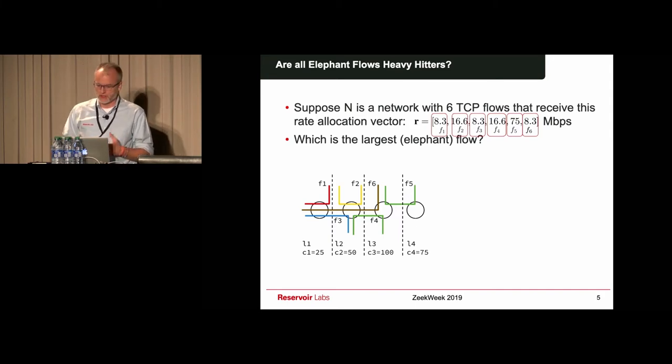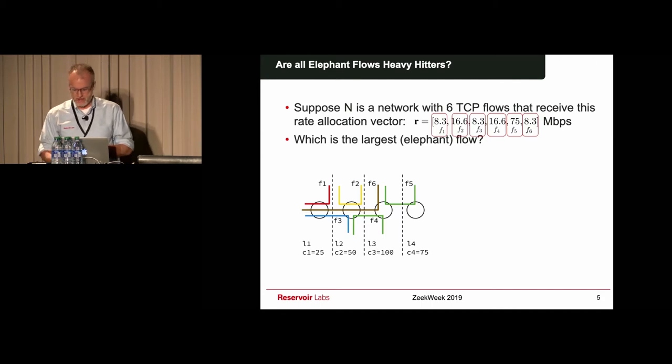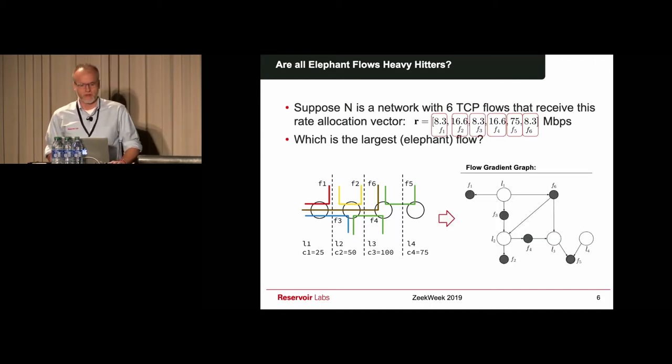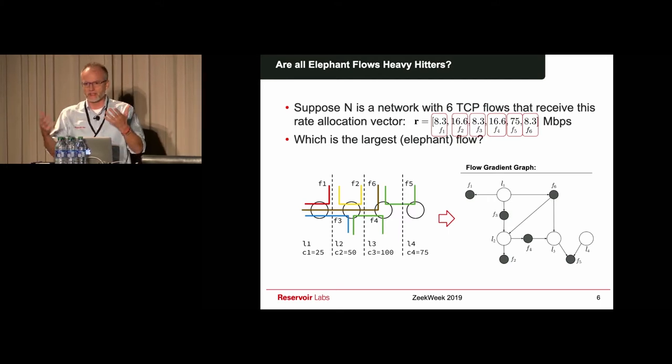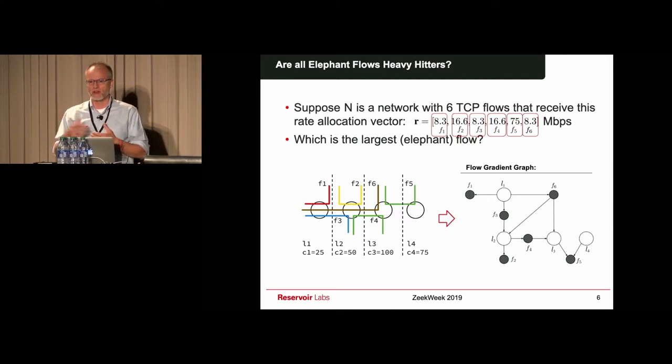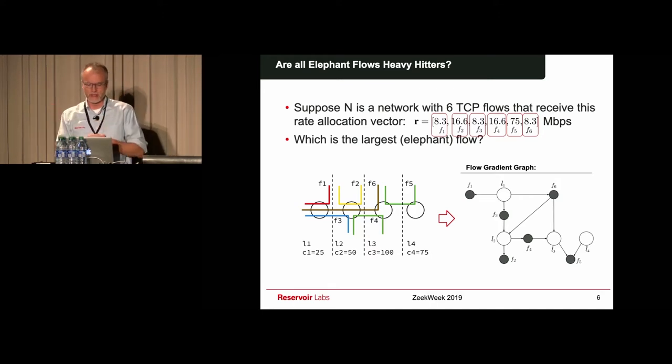What we have developed at Reservoir Labs is the mathematics behind this problem. Based on the topological structure of network, we can tell you which is the flow that has the highest impact. Networks actually have something called bottleneck structures. These bottleneck structures reveal that not all bottlenecks are equal, that there are ripple effects, and that they organize in certain hierarchies.